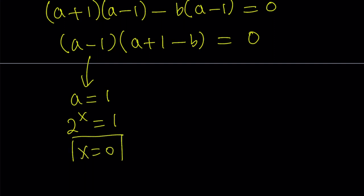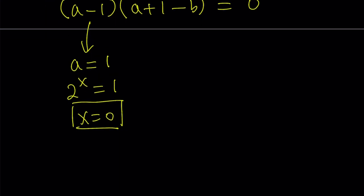And you get x equals 0. Easy, right? Any number to the power 0 is 1 except for 0. Okay.